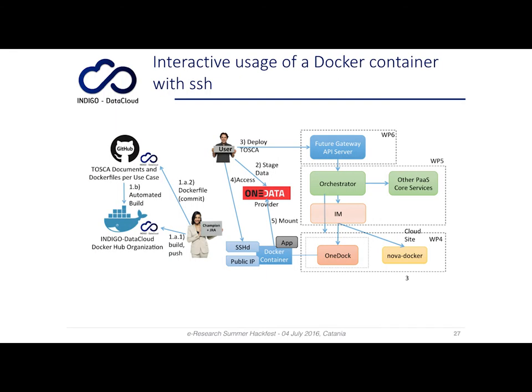From a graphical point of view, the starting point is the champion of the scientific community who, with the help of the GRA of Indigo, writes a Dockerfile that is committed to Docker Hub. Through the automated build functionality provided by GitHub, the Docker image is uploaded to the Docker Hub repository and made available for everyone to use and run.